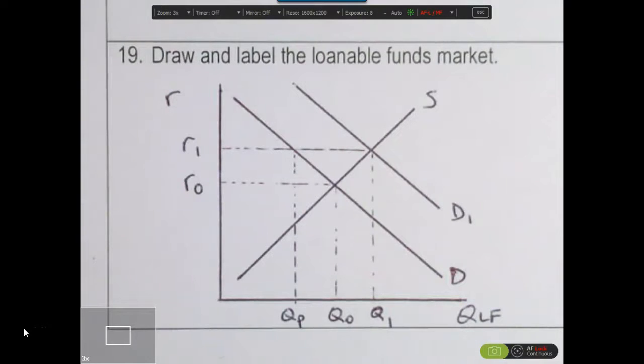When the government increases its borrowing, there's an effect on the loanable funds market. That effect is called crowding out.